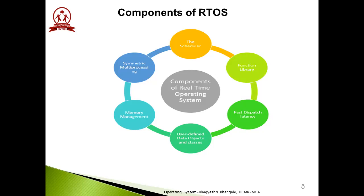The next component is symmetric multiprocessing, also called SMP. It allows multiple different tasks to run in parallel, which RTOS handles for parallel processing. Next is the function library, which is the most important element of RTOS. It acts as an interface because it helps connect the kernel and application code. Various function libraries are used in application code to connect the kernel and application code.